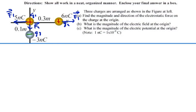Let's find the magnitude of these two forces and then add them together vectorially. We already know their directions, so if we have the magnitude, we can get the magnitude of the resultant force. For force number one, that force is going to be equal to k·q1·q2 over r squared.